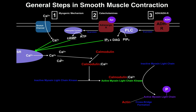Now here smooth muscle contraction is very different still. Rather than calcium binding to troponin — which occurs in skeletal and cardiac muscle — calcium instead binds to a calcium-binding protein called calmodulin, and that activates it. When you have this calcium-calmodulin complex, it binds to an enzyme called myosin light chain kinase. Without calmodulin attached, this enzyme is inactive, but as soon as calcium-calmodulin binds to it, myosin light chain kinase becomes activated.